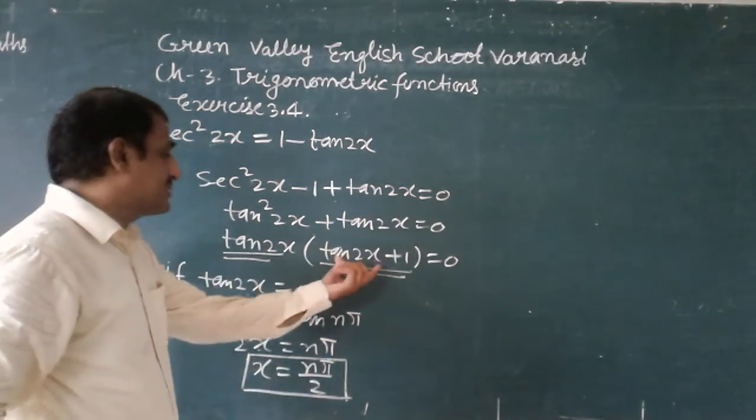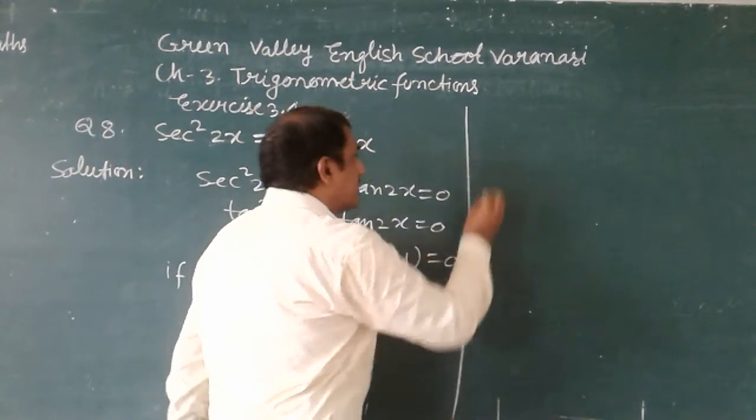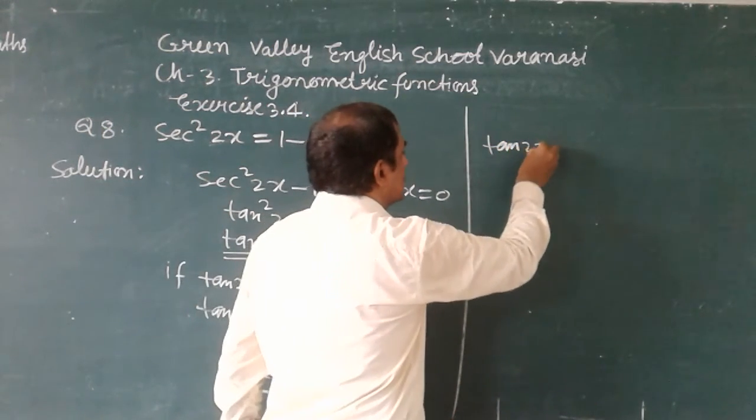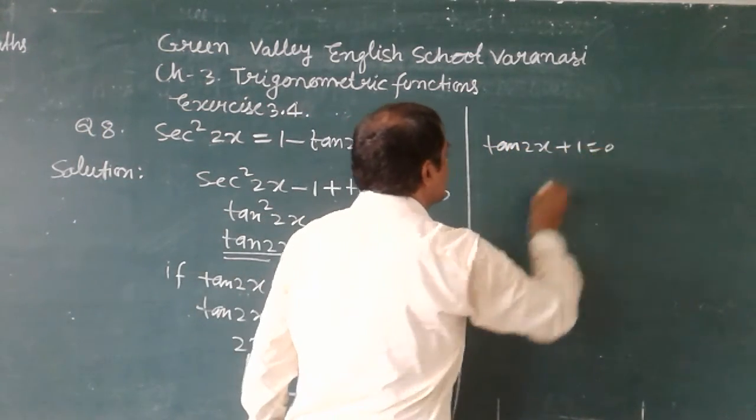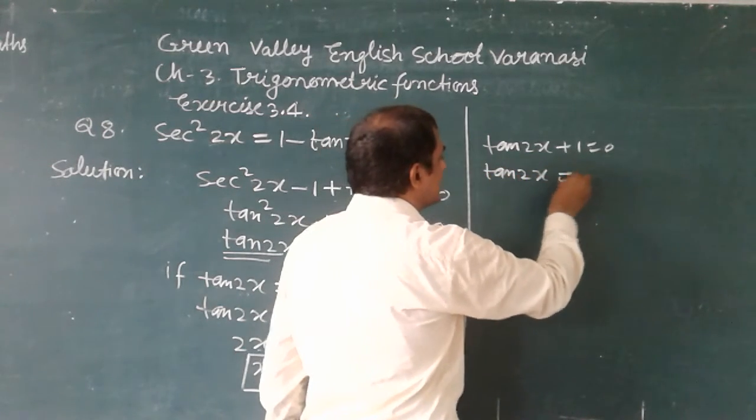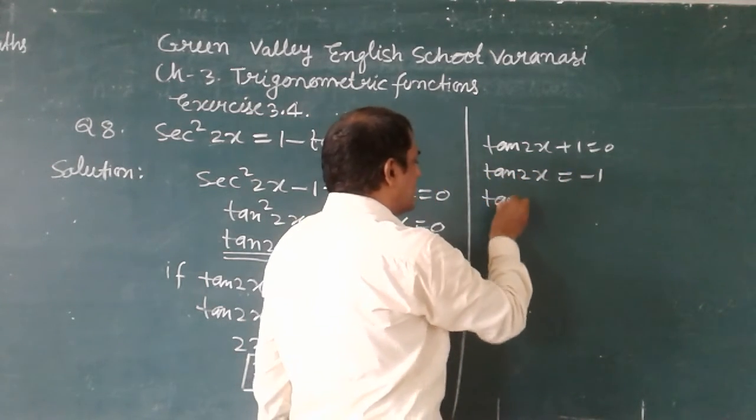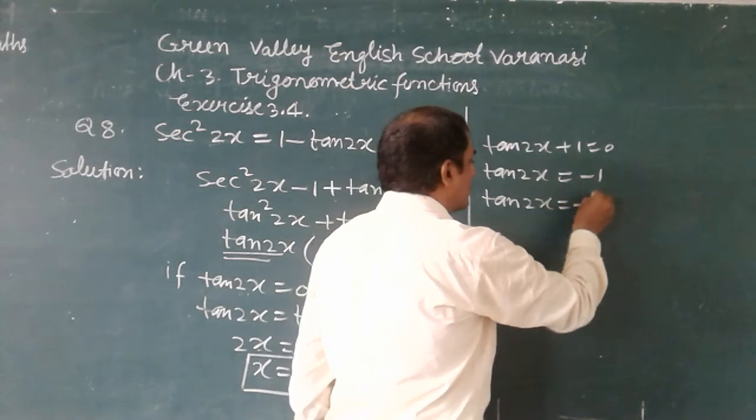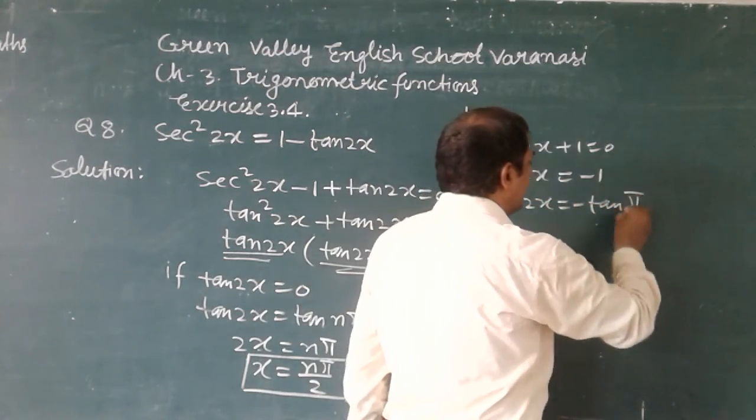Now, I am taking this expression. tan2x plus 1 is equal to 0. tan2x is equal to minus 1. tan2x is equal to minus tan(π/4).